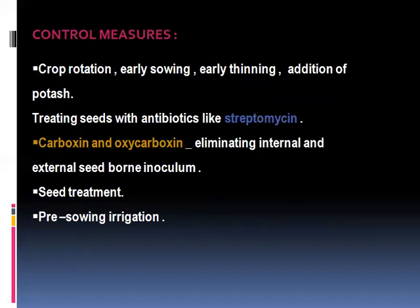To control this disease, crop rotation is a very popular method. Early sowing, early thinning, and additional potash application are also suggested. Treating seeds with antibiotics like Streptomycin is recommended. Carboxin and Oxycarboxin are also used for eliminating internal and external seedborne inocula. Seed treatment is very important due to the very long viability period. Biological, cultural, and chemical methods are all suggested, along with pre-sowing irrigation and field sterilization after harvesting.